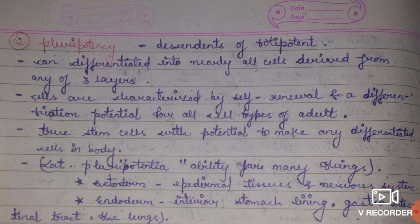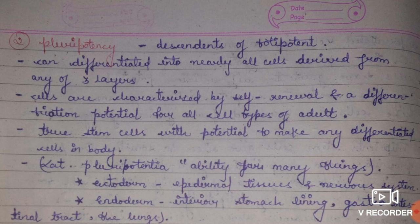Pluripotency is derived from the Latin word 'pluripotentia,' meaning ability for many things. Pluripotent cells are descendants of totipotent cells — they originate from totipotent cells. They can give rise to many cell types, mainly cells derived from the three germ layers and non-embryonic cells. These cells have both differentiating capacity and self-renewing capacity, and are called true stem cells.